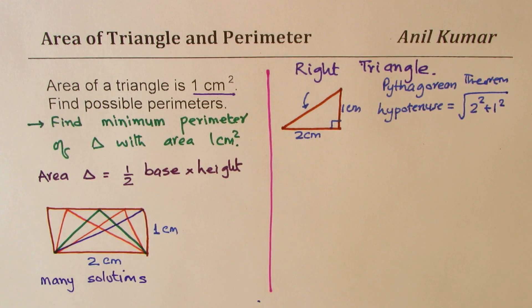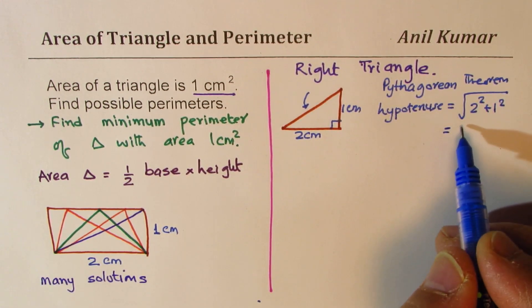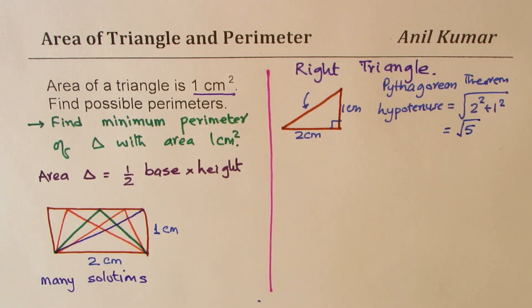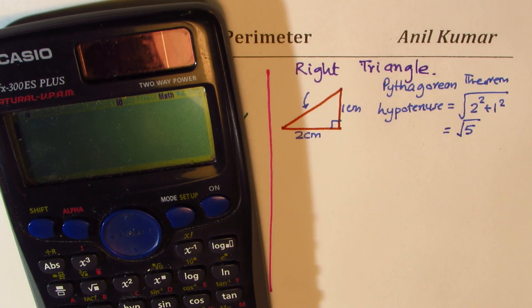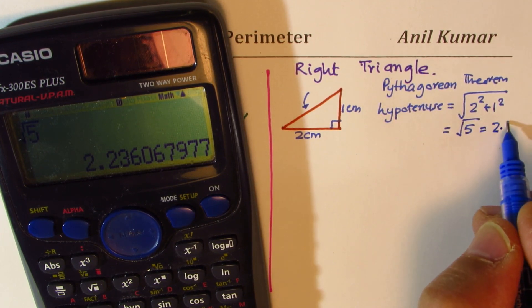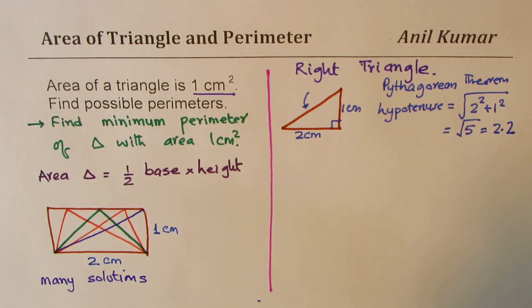That gives you the hypotenuse, which in our case is going to be four plus one five square root, which is square root of five. We can use calculator to find approximate value of square root of five. It is an irrational number, which could be written as two point two. So this side becomes two point two centimeters for us.